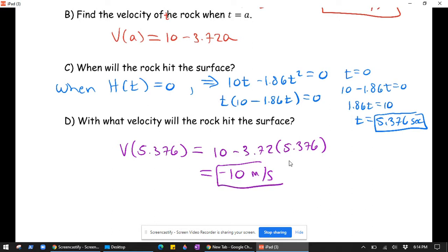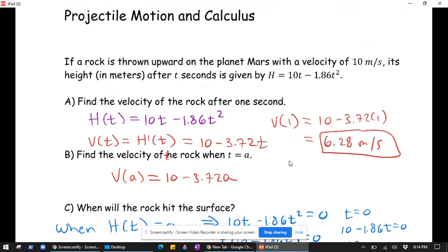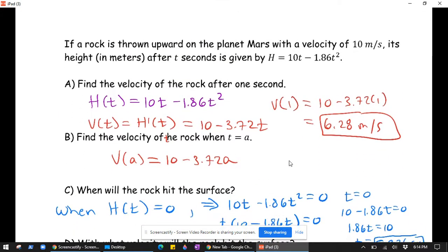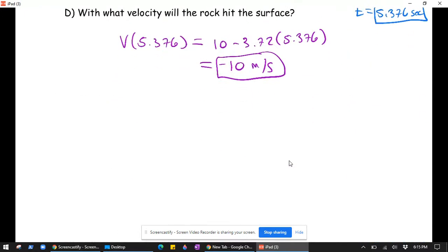So there's something to point out here. Notice the negative 10 is precisely the opposite of the velocity when the rock was launched. That makes sense. And the reason it does is just if we graph the height function.